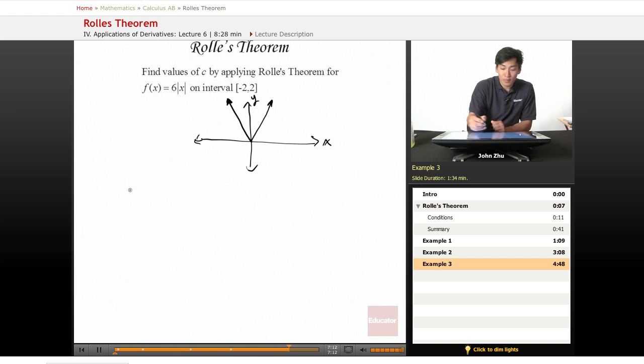So now, let's check, is it continuous everywhere? Yes, there are no holes or asymptotes or any strange activity. So yes, continuous on [-2, 2].